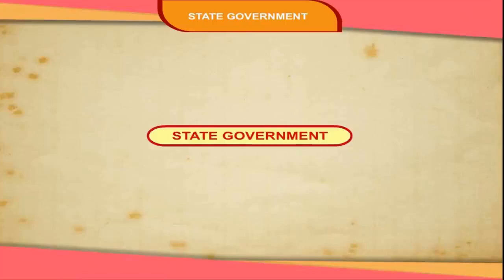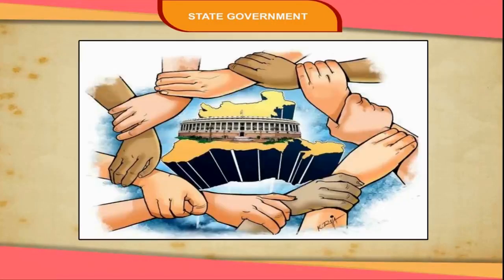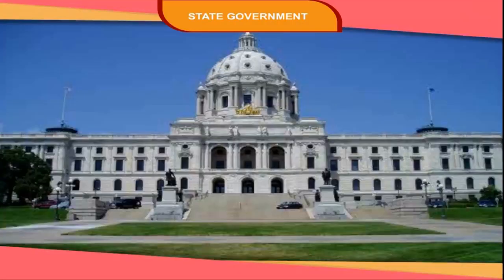India has a federal setup, which means we have two levels of government. One is meant for the entire country, called the central or union government, and the other works at the state level, called the state government.